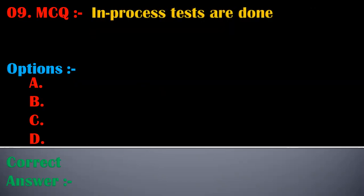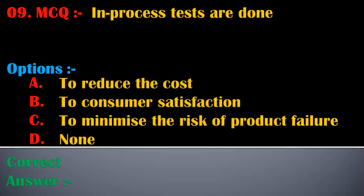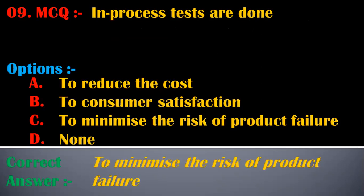The ninth MCQ is: in-process tests are done — options are to reduce the cost, for consumer satisfaction, to minimize the risk of product failure, or none. The correct answer is option C: to minimize the risk of product failure. In-process tests are done to minimize the risk of product failure.